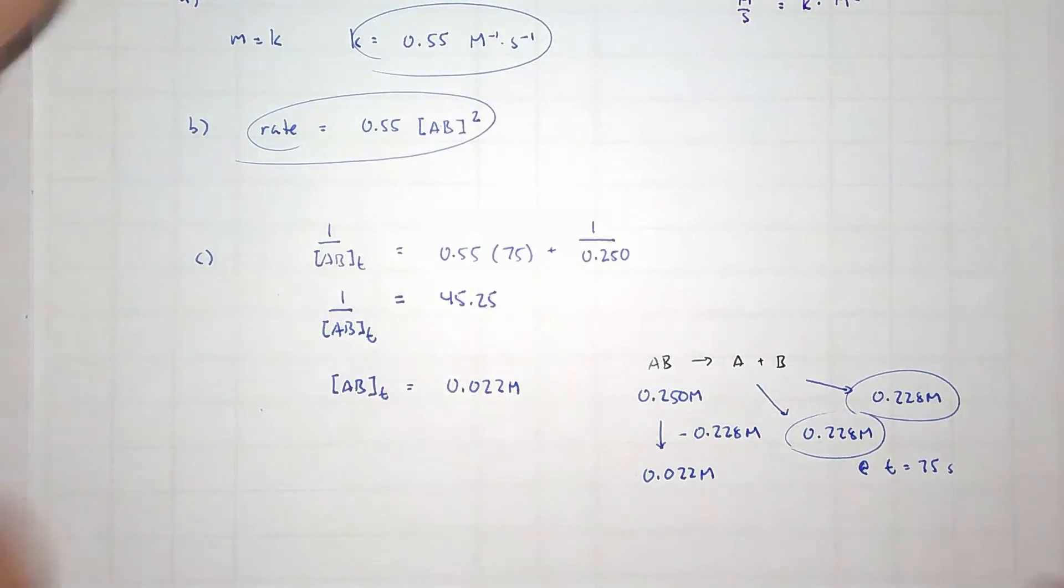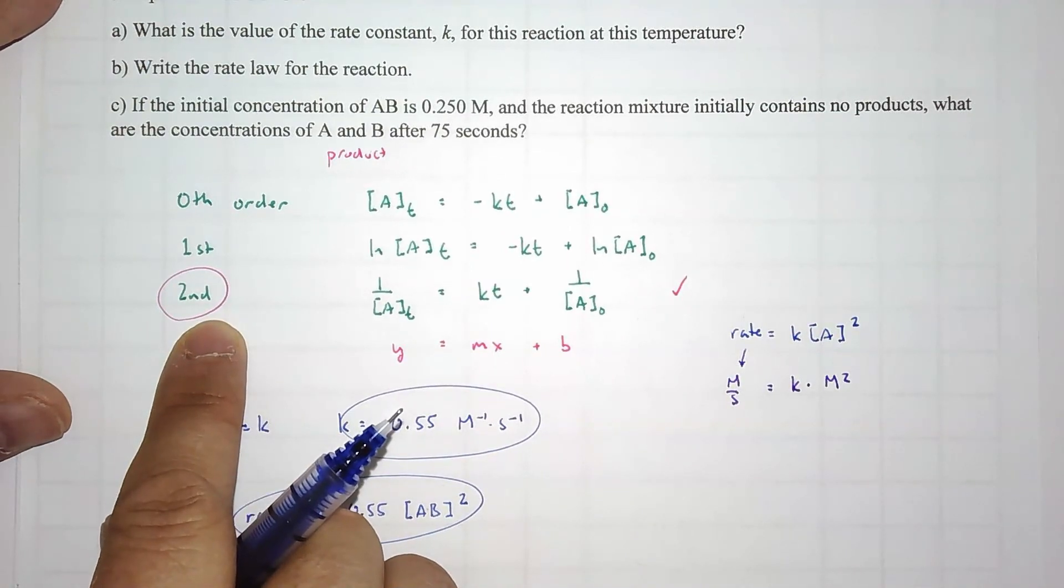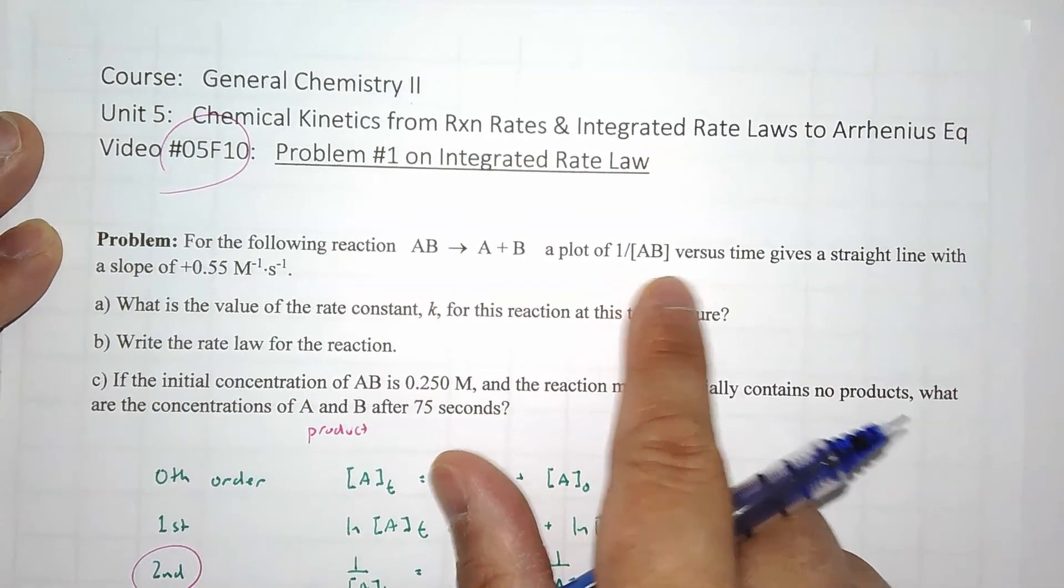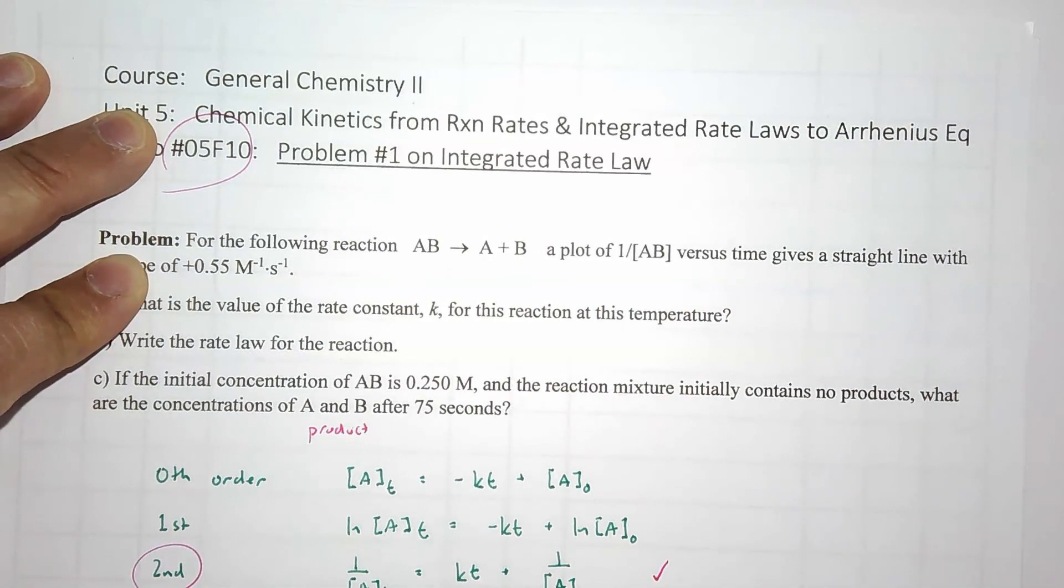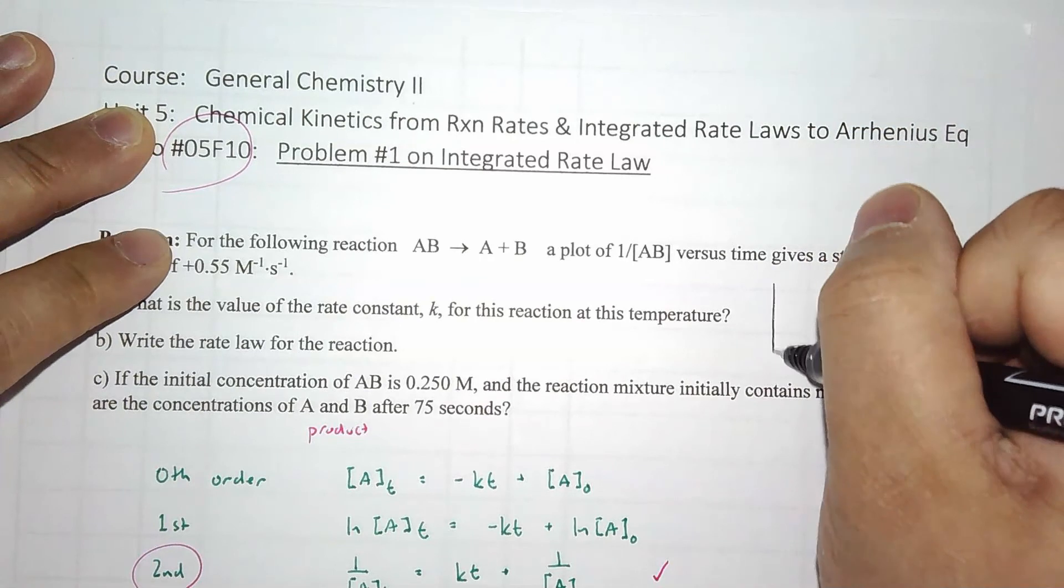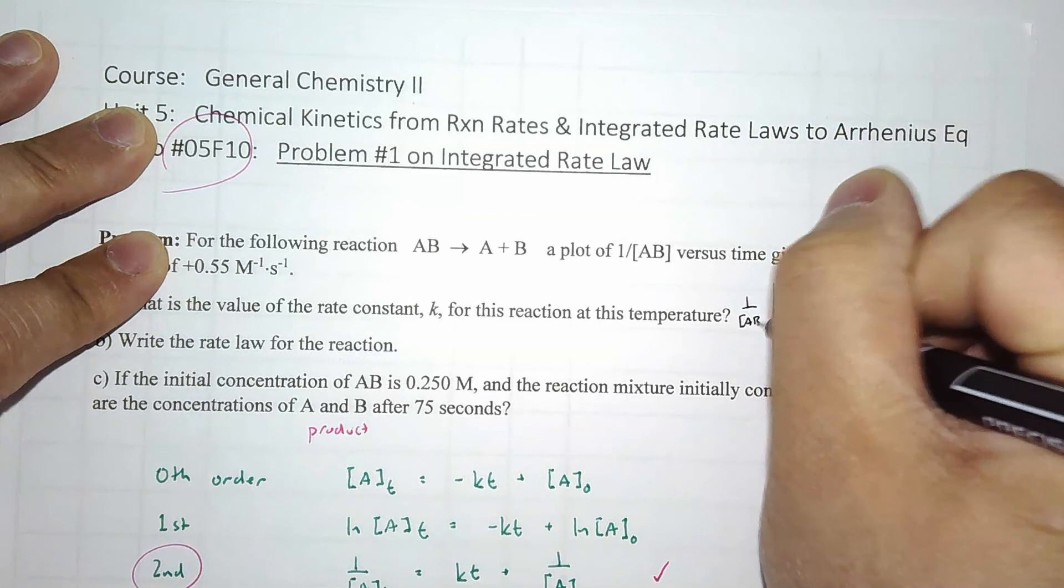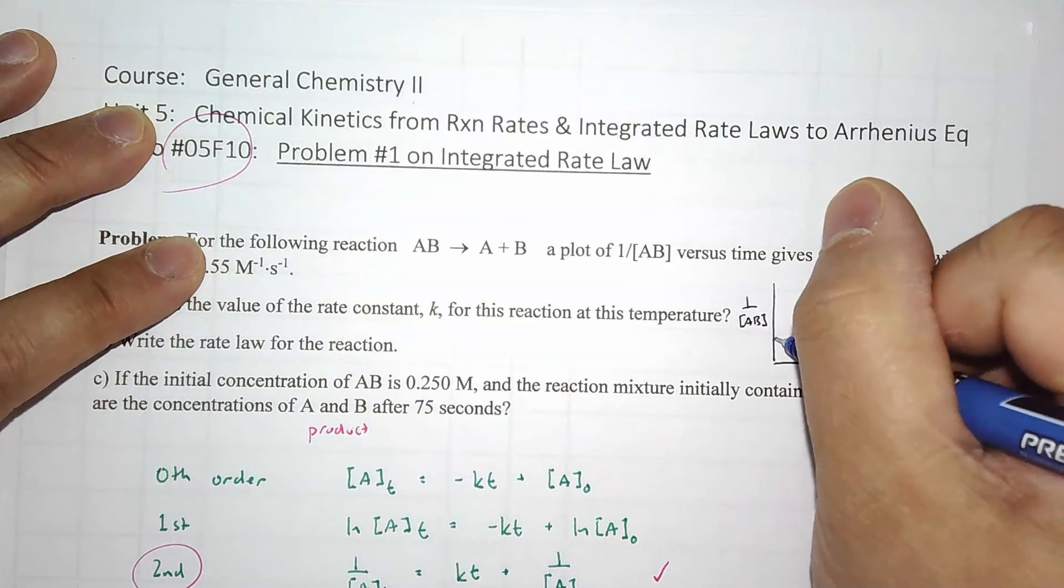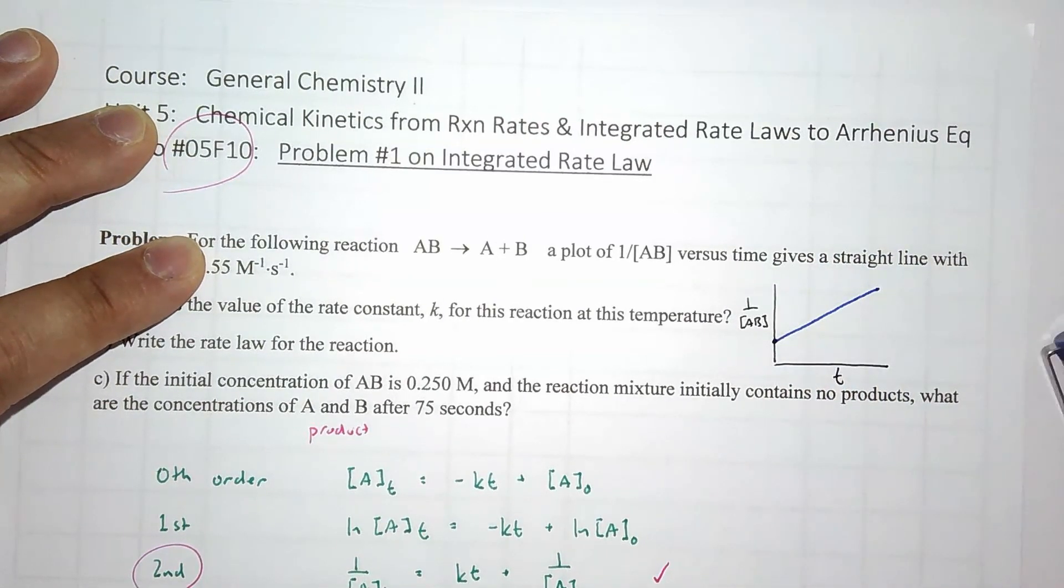Does that sound good? Again, we are using the second order integrated rate law because they told us that this plot, 1 over AB versus time, gives us a straight line. And it looks somewhat like this. You have 1 over AB versus time, and it starts at some y-intercept, and it has a positive slope where m equals k.